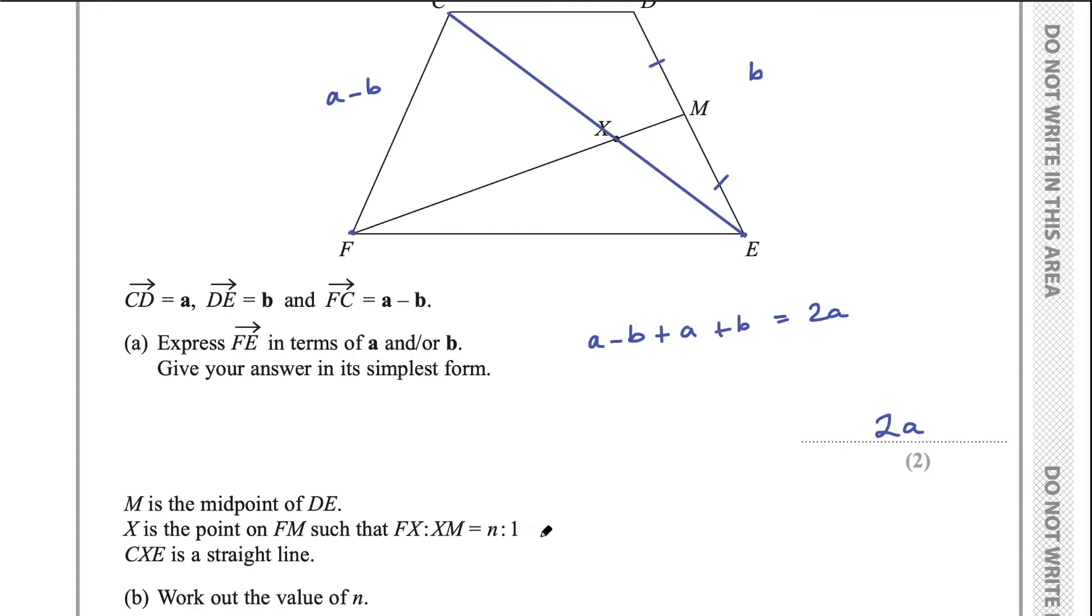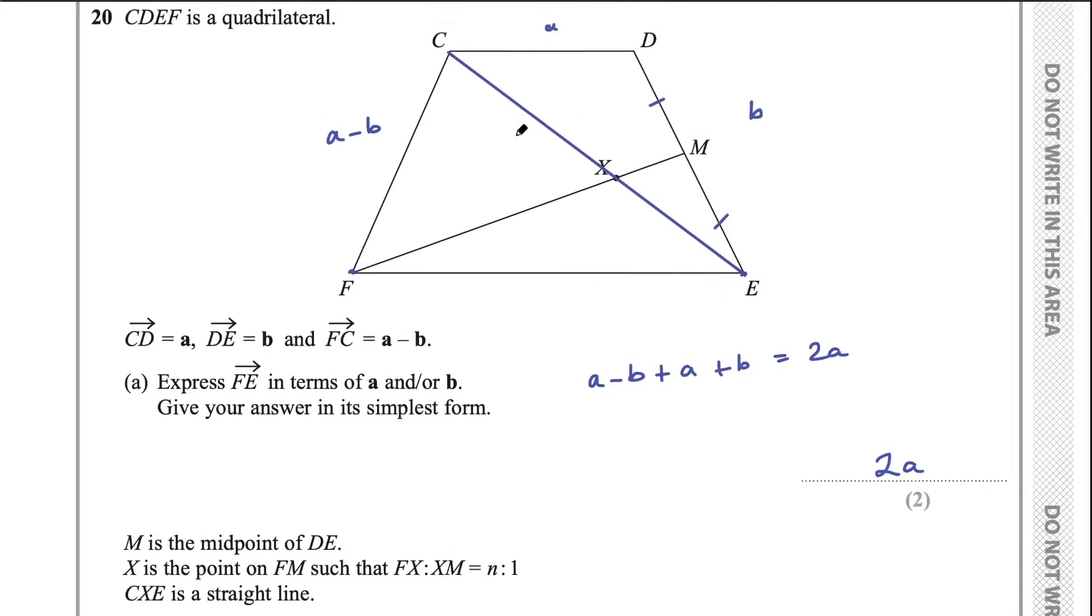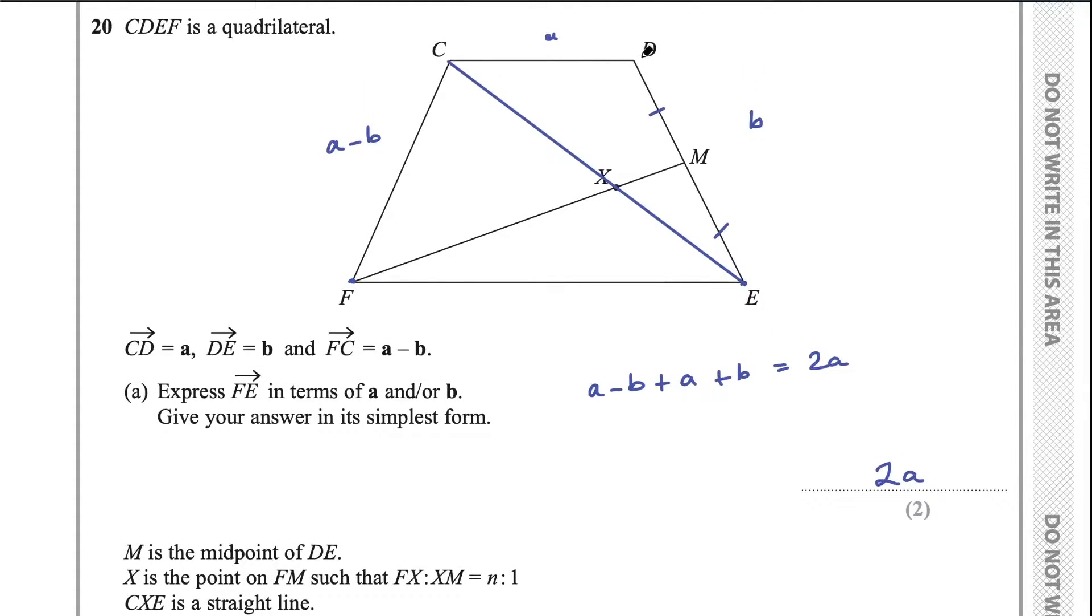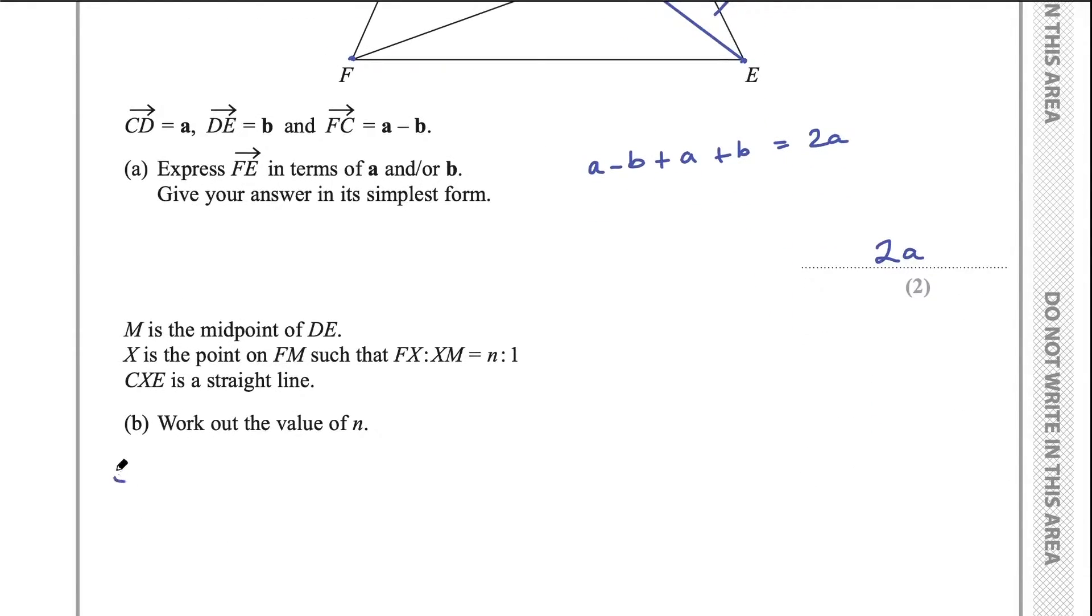All right, so spoiler alert, the key to this problem is that this is a straight line and therefore CE is a multiple of CX, is a scalar multiple. That's going to be the key to help us solve this because CE, the vector CE, we can work out, right? CE is just a plus b. So if we want to go from here to E, we go a, the vector a plus the vector b and we'll get to E. So CE is a plus b. And so that's going to be my main starting point.